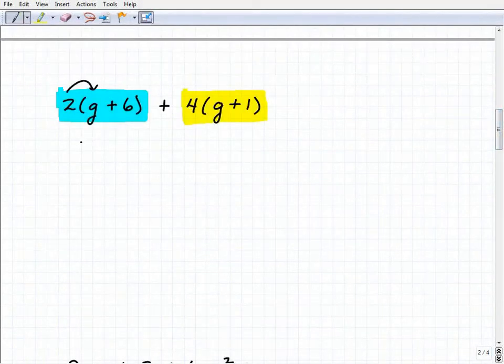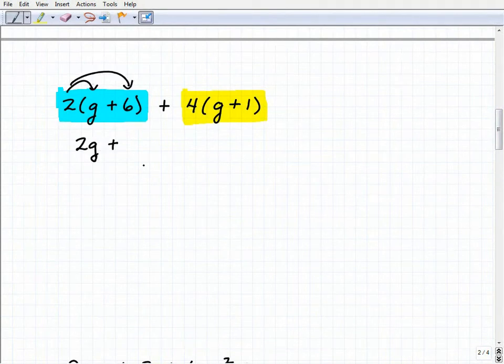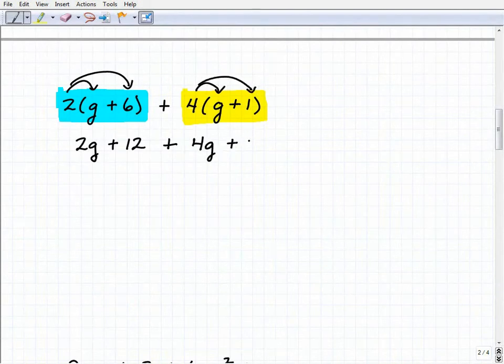So let's go ahead and have you do that. All right, so this one's going to be 2 times g, 2g, plus 2 times 6, of course that's 12. All right, now let's go to work on the second one. This is going to be plus 4 times g, plus 4 times 1, which is 4.